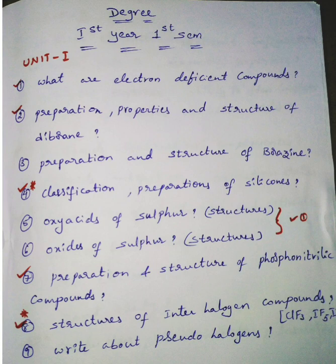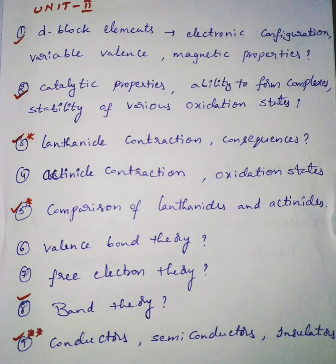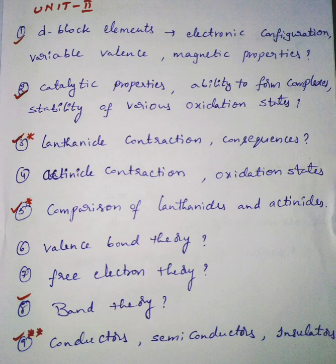In unit two, we have nine questions. He is generally asking about electronic configuration, variable valences, magnetic properties, and catalytic properties. Maximum asking is on lanthanide contraction, comparison of lanthanides and actinides. The last question on conductors, semiconductors, and insulators is repeatedly asked — compulsory one question, maximum that is band theory.